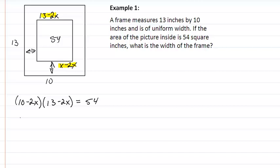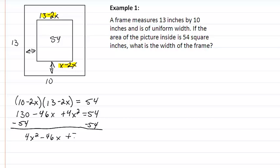So if we expand this out, we are going to get 130 minus 46X plus 4X squared equal to 54. Let's get the 54 on the other side and put this in order. So we have 4X squared minus 46X plus 76.